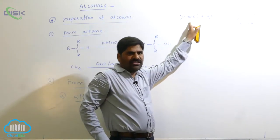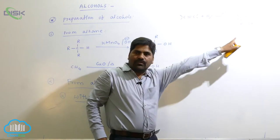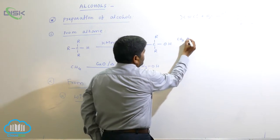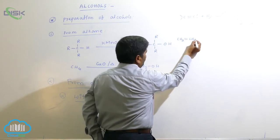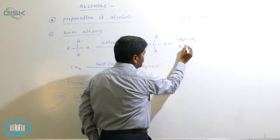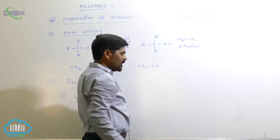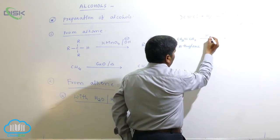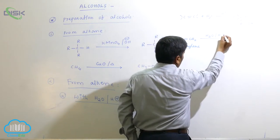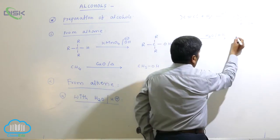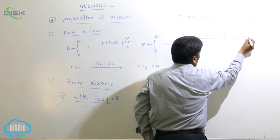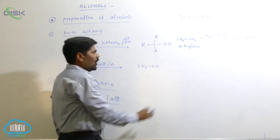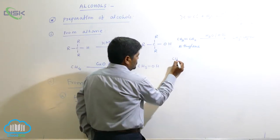The general skeleton is that an alkene converts into an alcohol. For example, CH2=CH2 (ethylene) when reacted with H2O in the presence of acid medium forms ethyl alcohol (CH3CH2OH).